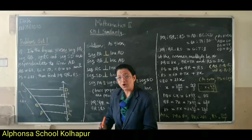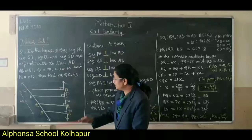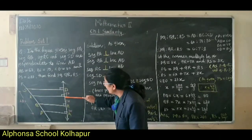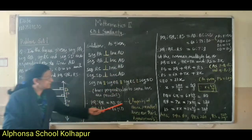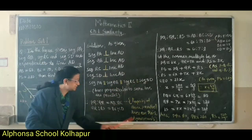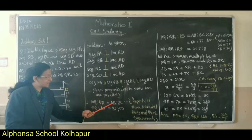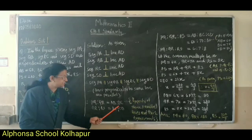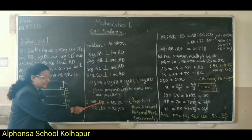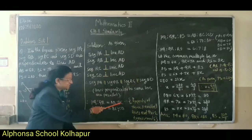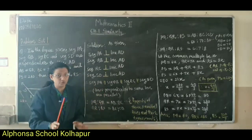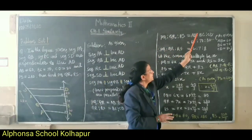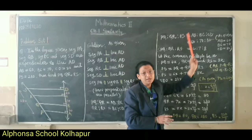Similarly, for the next three parallel lines and their transversal, QR upon RS is equal to BC upon CD. Since QR is common in both ratios and BC is also common, we can combine both ratios. Therefore, PQ is to QR is to RS is equal to AB is to BC is to CD.